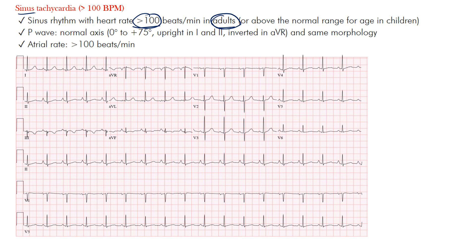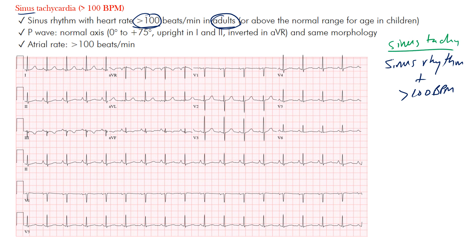Because it's sinus tachycardia, the first part means we have a sinus rhythm — so it's pretty much sinus rhythm plus a rate over 100 beats per minute. That's the definition of sinus tachycardia. We have to first ensure that sinus rhythm is present, and we went through a whole lecture on how to identify sinus rhythm.